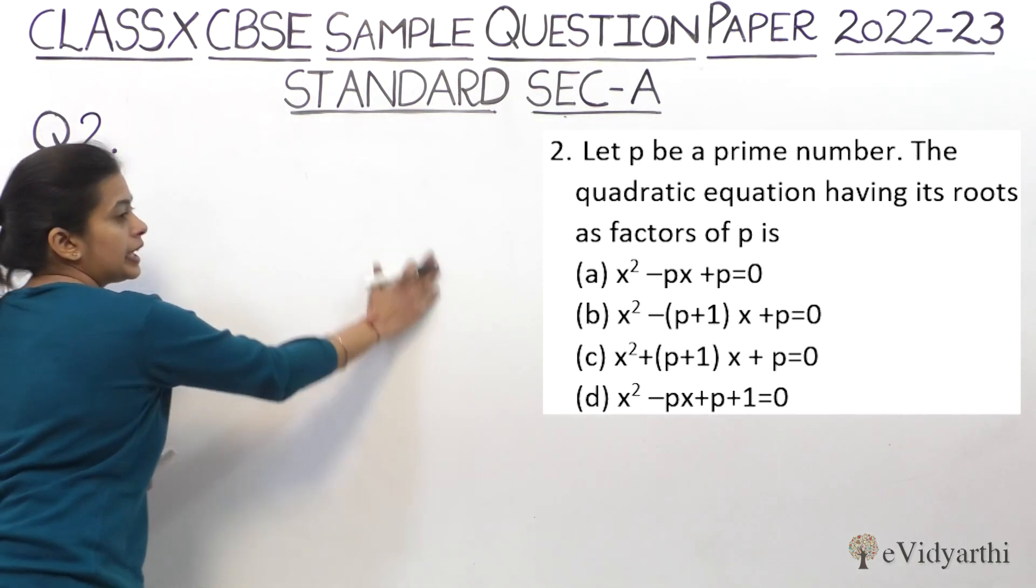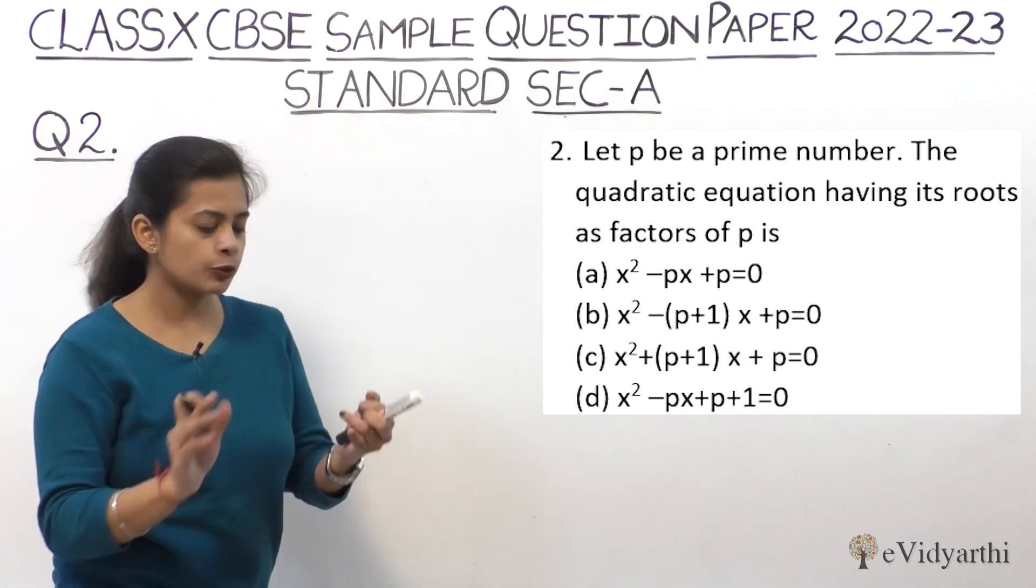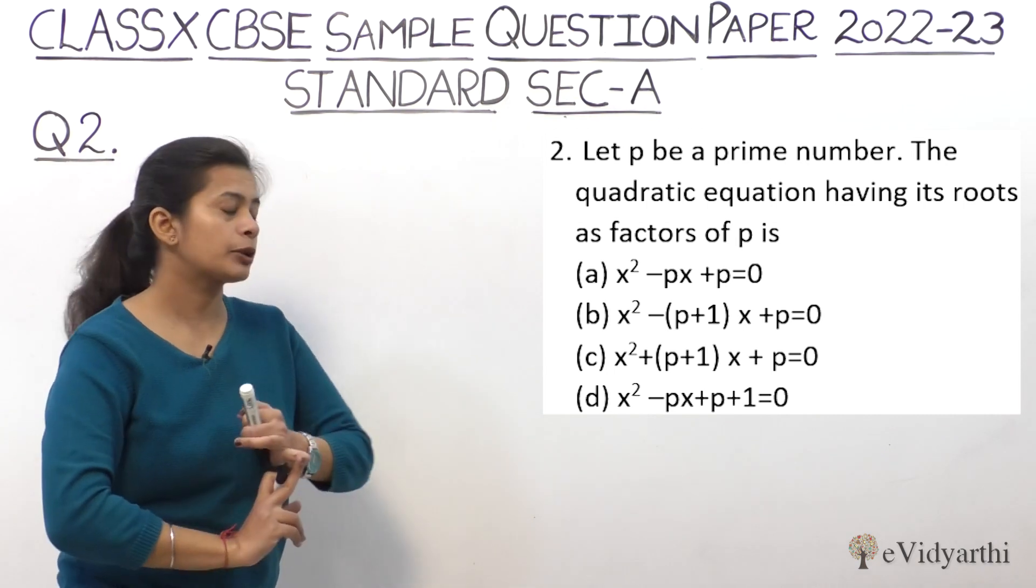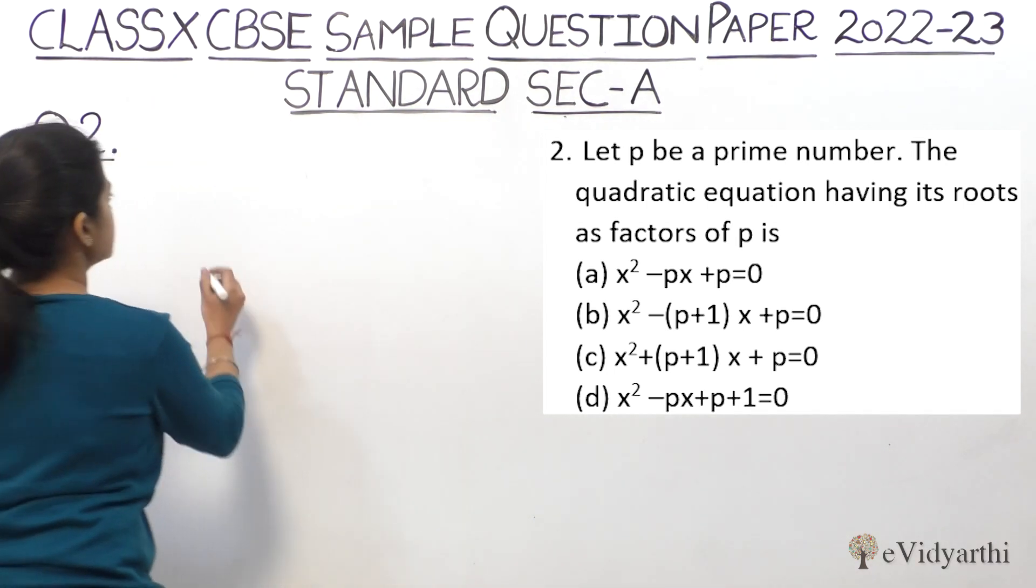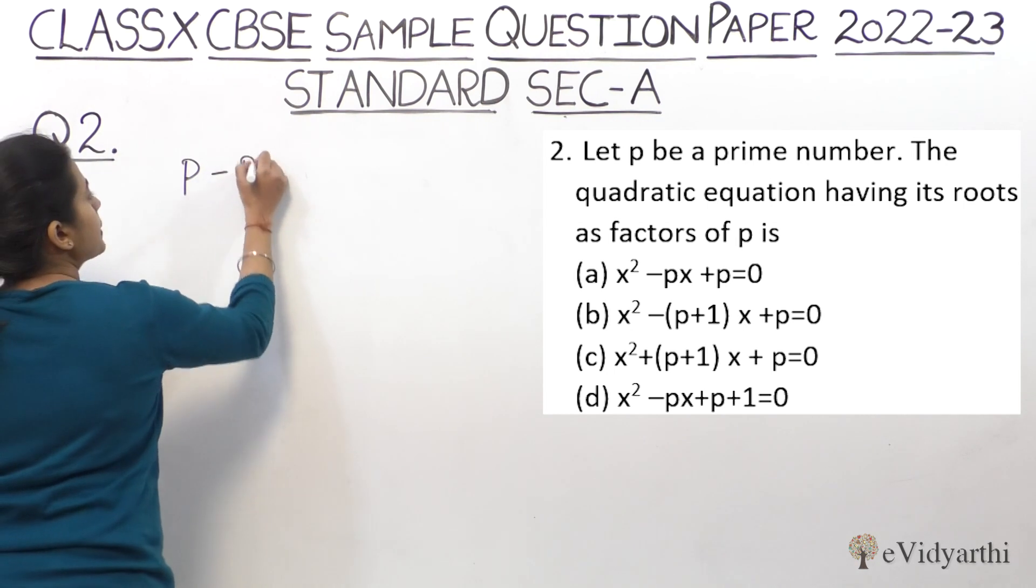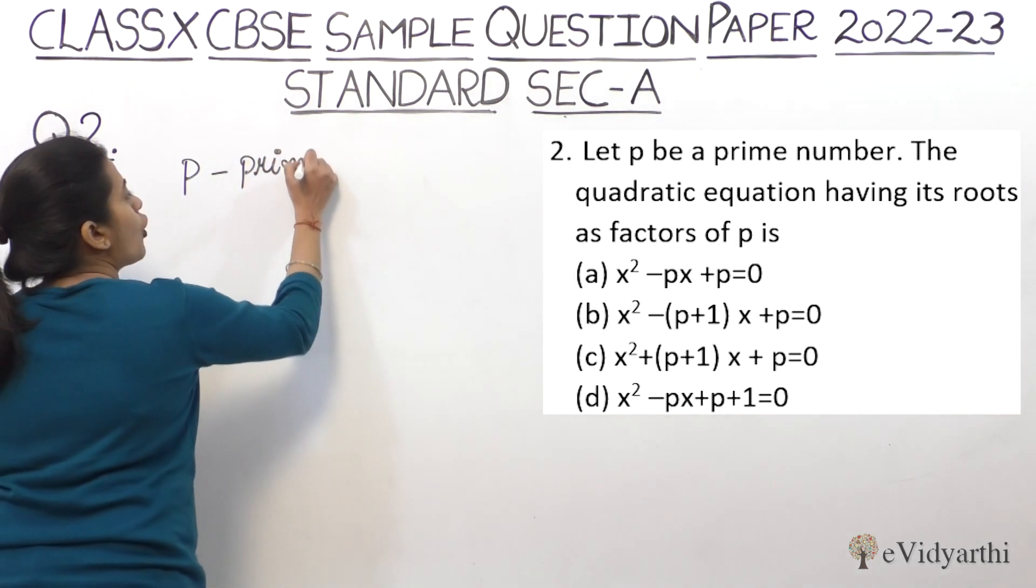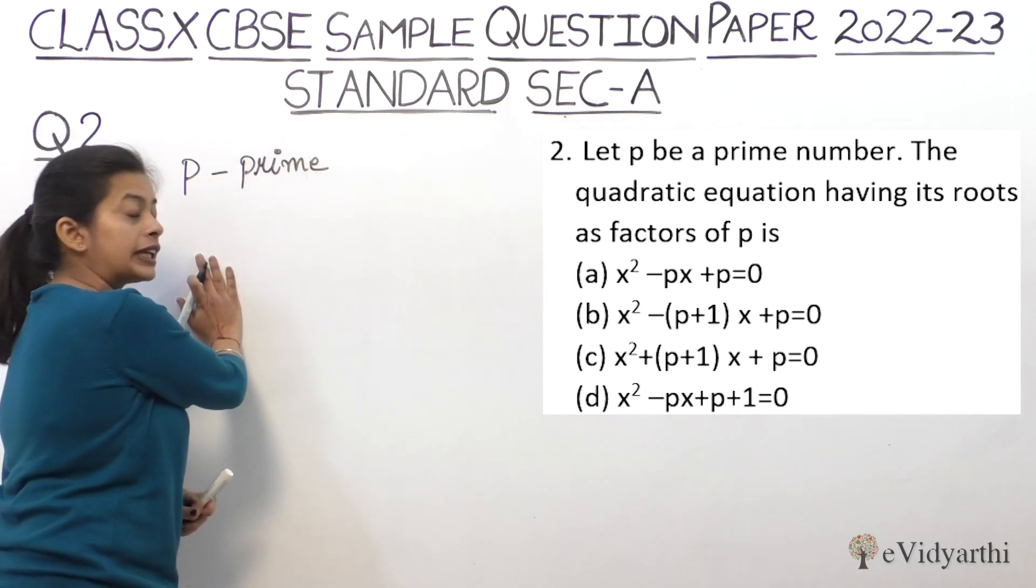Now we don't know about the equation. We don't know alpha, we don't know beta, we don't know any roots. But one thing we know is that p is a prime number, and the factors of p are the roots of our equation.